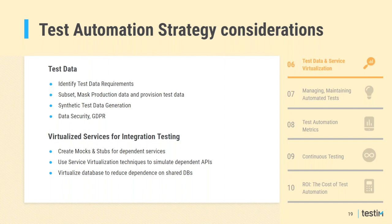Test data is an important aspect of testing — in many cases it drives testing as in data-driven testing. You need to understand your test data requirements before you start. Test data coverage is as important as test coverage itself. Testing teams typically derive test data from production databases, subset and mask it, make it available as a gold copy, and then provision it to individual teams. Test data may get burned after testing, requiring reprovisioning from your gold copy.